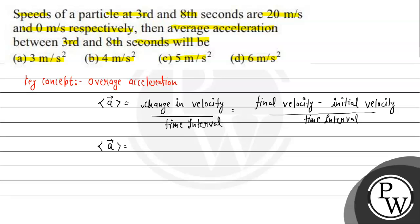We can see average acceleration equals final velocity. See, we can see the speed given. We can see the speed at 3rd second is 20 given, and at 8 seconds the speed is 0 meters per second.